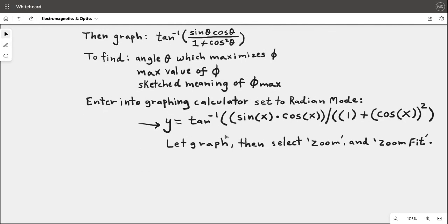Inverse tangent, double parenthesis, then sin x, open parenthesis x times cos x. There are really specific formats how it's entered in the calculator, the graphing calculator. Let graph, then select zoom and zoom fit.